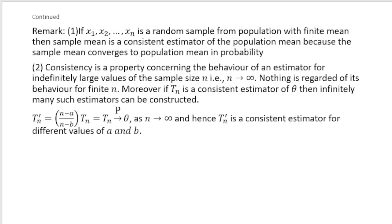There are a few remarks before I take some examples. If X1, X2, ..., Xn is a random sample from a population with finite mean, then the sample mean is a consistent estimator of the population mean — this is an important remark because the sample mean converges to population mean in probability. Second point: consistency is a property concerning the behavior of an estimator for indefinitely large values of the sample size N as N tends to infinity. We do not talk about the behavior for a small sample or finite value of N.